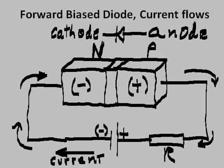Here's an example of forward bias — current is flowing. The negative terminal of the battery is connected to the negative cathode, and the positive terminal of the battery is connected to the positive part of the diode, the anode. Current flows.